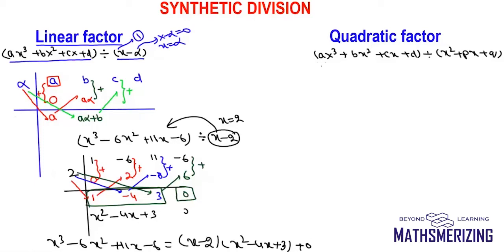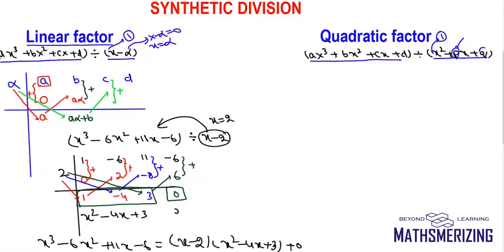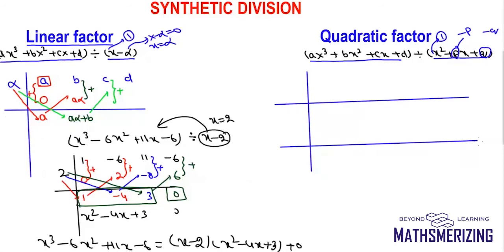Now we will look at how to divide a polynomial with a quadratic factor. For a quadratic factor, the coefficient of x² should be 1. For coefficients p and q, I take their negatives: −p and −q. I draw the lines, write −p and −q on the left, and the polynomial coefficients on the right. The first step is to put 3 zeros below the first three coefficient positions.